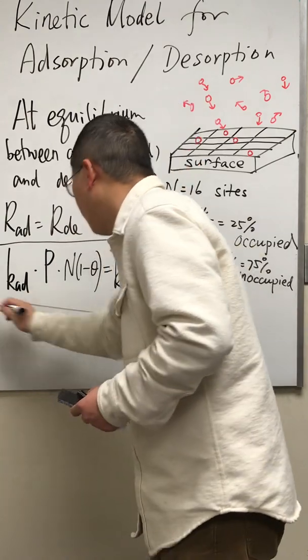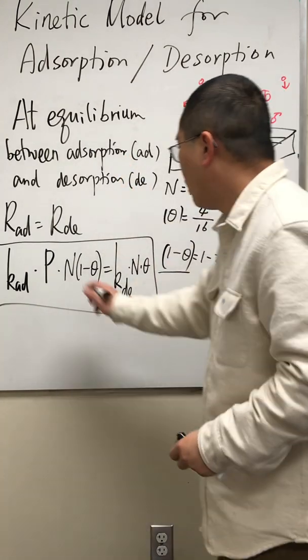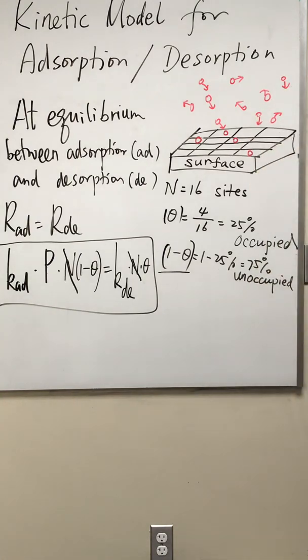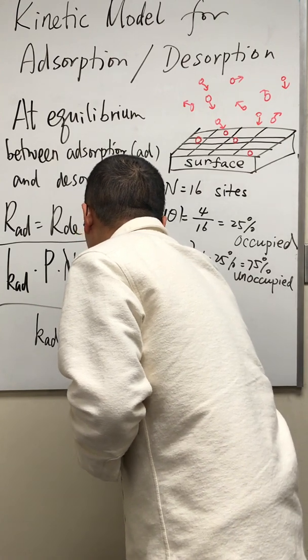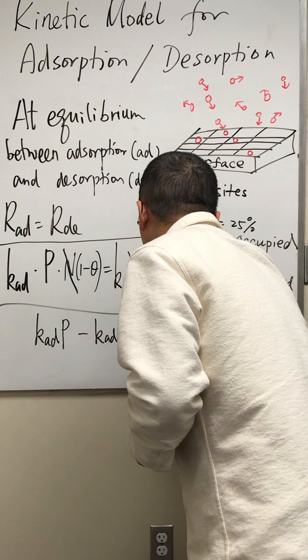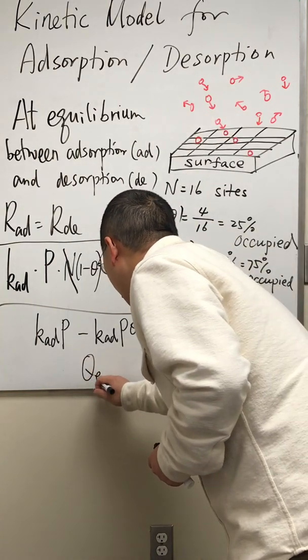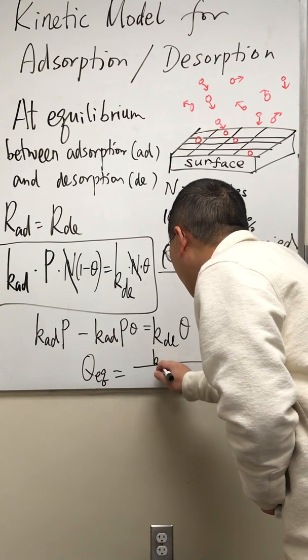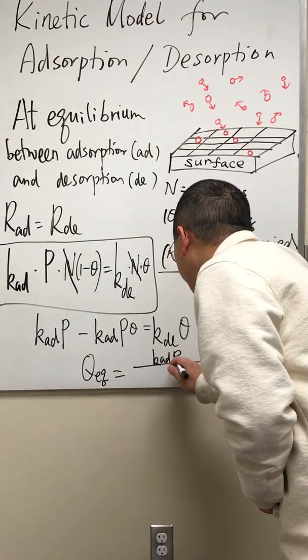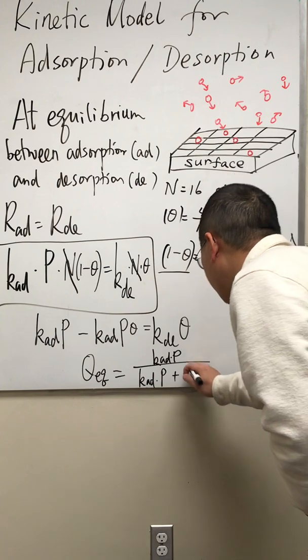So over here you get this equation for the equilibrium between adsorption and desorption. We can immediately see that N cancels, so we have K_AD times P minus K_AD times P times theta equals K_DE times theta. And then we have an equation for theta, which is actually the equilibrium theta. The percentage of the occupied sites is equal to K_AD times P on top, times pressure on top, and then on the bottom K_AD times P plus K_DE.